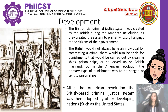The first official criminal justice system was created by the British during the American Revolution, primarily to justify hangings to the citizens of their government. In each district, there was a magistrate — what we would today know as a judge — who determined whether the British government had enough evidence to hang an individual for a crime. There would also be trials for punishments carried out by prison ships such as the notorious HMS Jersey. After the American Revolution, the British-based criminal justice system was adopted by other developing nations such as the United States.